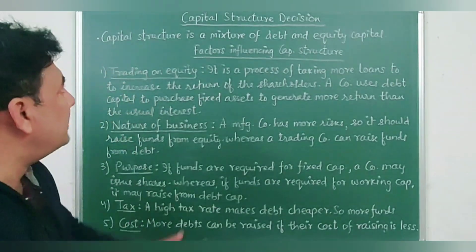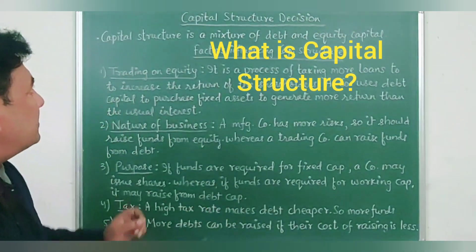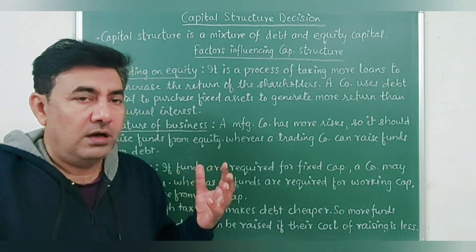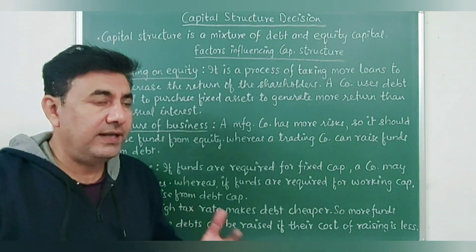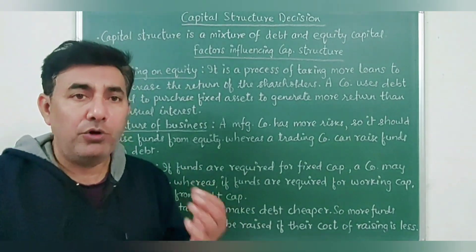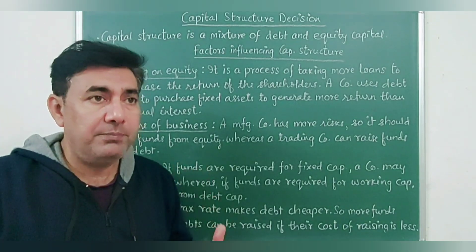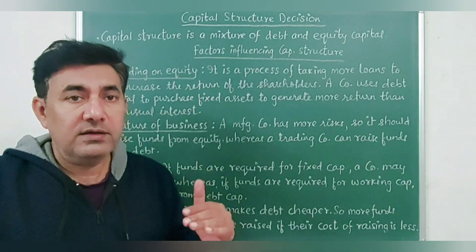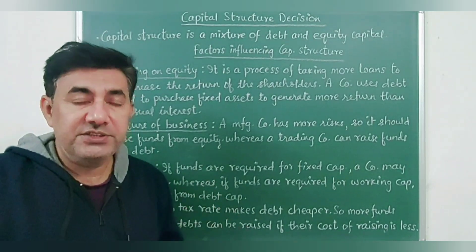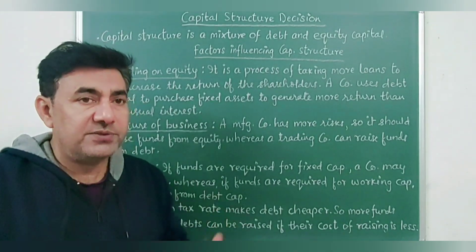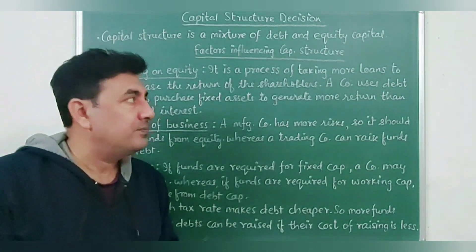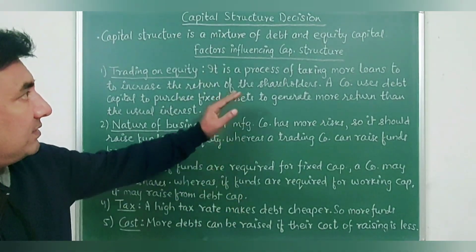To start with this chapter, let's try to understand what is capital structure. In simple words, capital structure is a mixture of debt and equity capital. Debt capital means borrowed funds — the capital which is raised by the company by issuing debentures, bonds, etc. The other type is equity share capital, where the company issues equity shares and preference shares. So capital structure is a combination of debt capital plus equity capital.